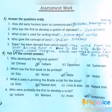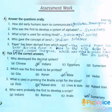Page number 78, Assessment Work, Option A: Answer the questions orally. First question: How did early humans learn to communicate? Answer: Early human beings learned to communicate by using gestures, speaking, and drawing their feelings on walls.